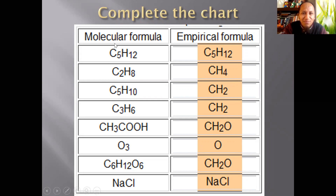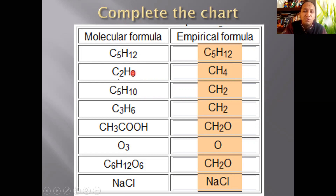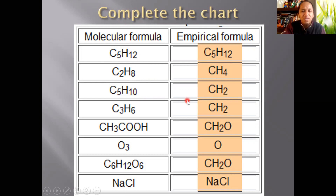The proportions must always be respected, as we did in stoichiometry. For example, 5 to 12 means for every one carbon there are four hydrogens. So with two carbons you have eight hydrogens. For CH2, for every one carbon you have two hydrogens, so five carbons would require ten hydrogens, and so on.